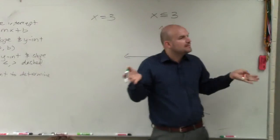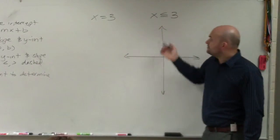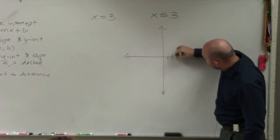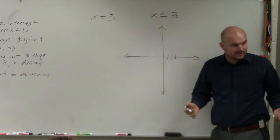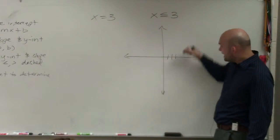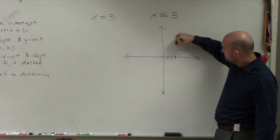It creates just a vertical line. Use a table of values if you need to. Basically, we know that x is equal to 3, and it's always equal to 3. So no matter what the values of y, x is always going to equal 3.